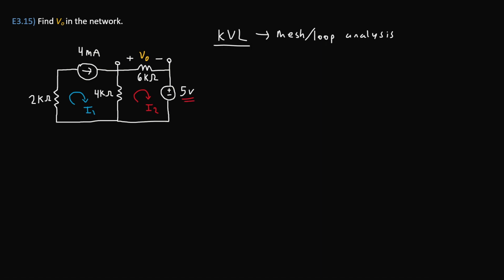The KVL principle requires that the algebraic sum of voltages in a loop should be equal to zero. Now another principle which we'll need to use is Ohm's law, which basically states that voltage is equal to current times resistance.